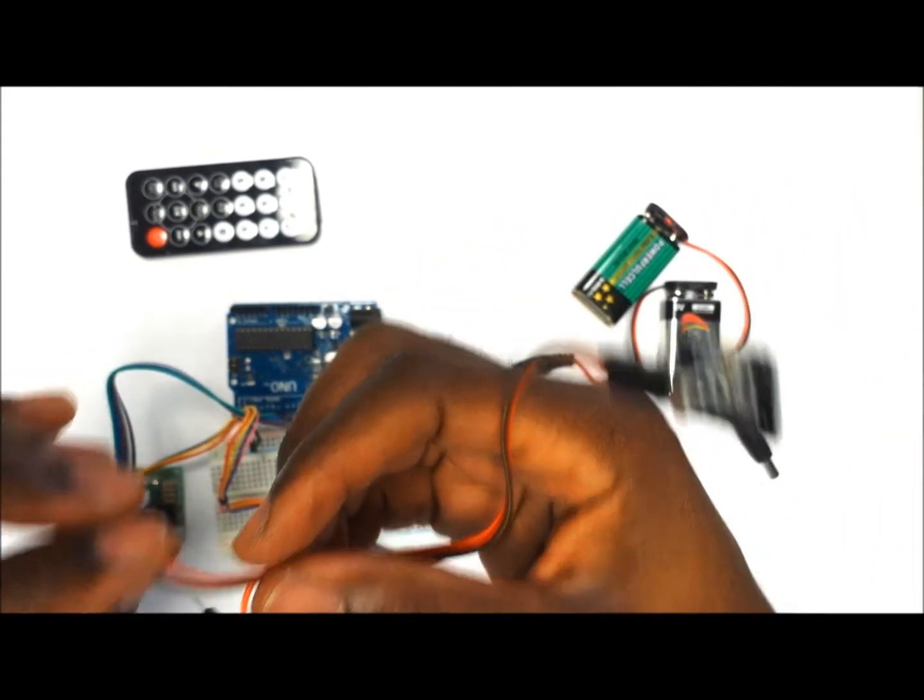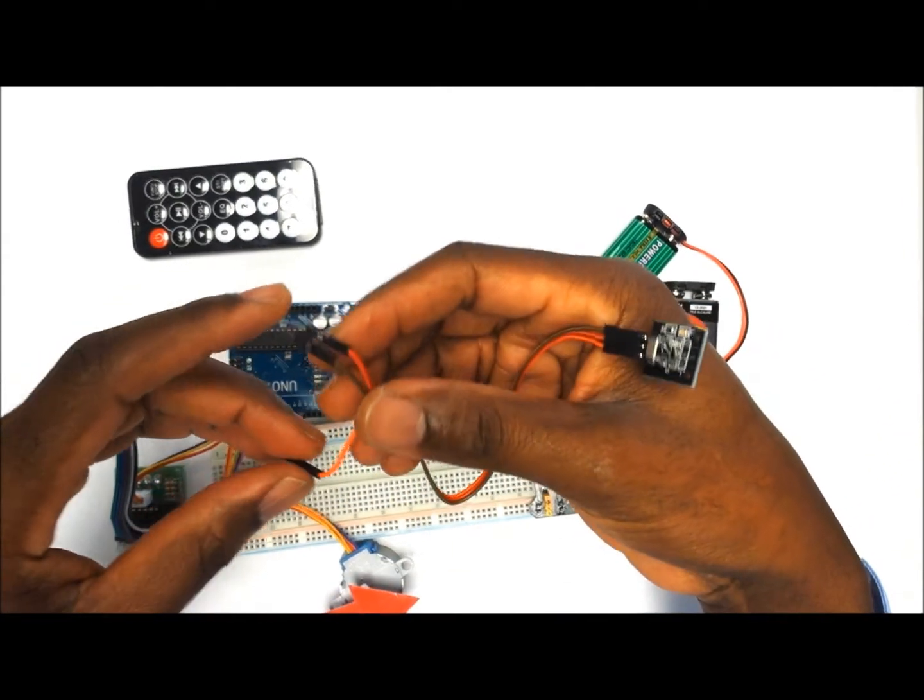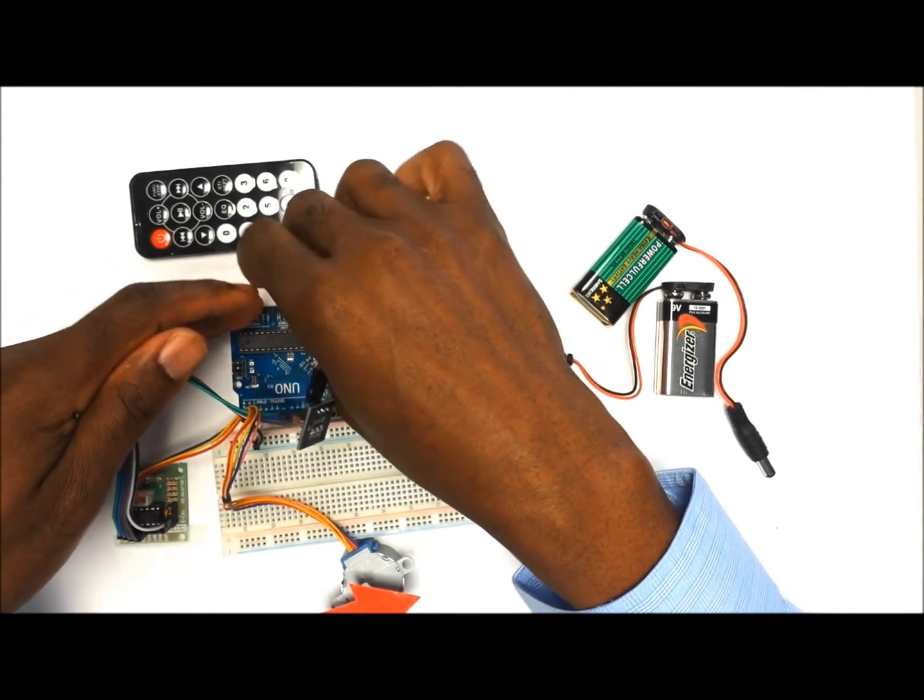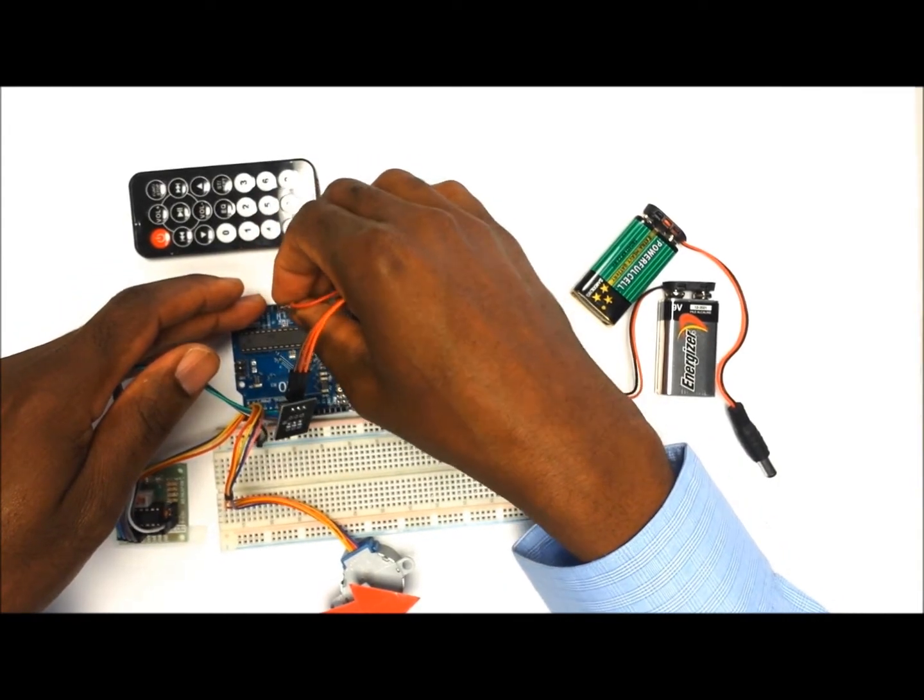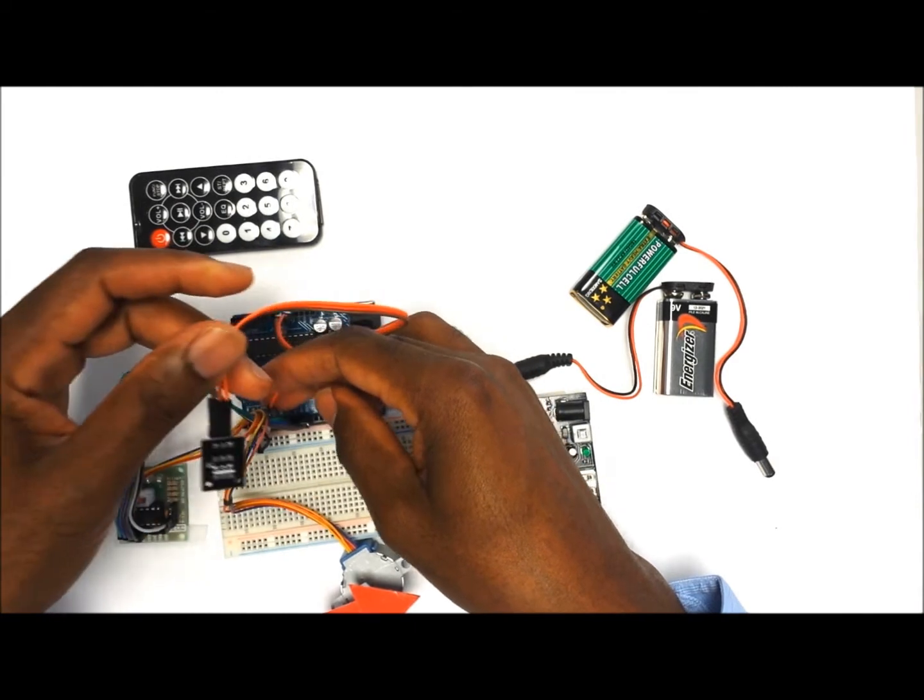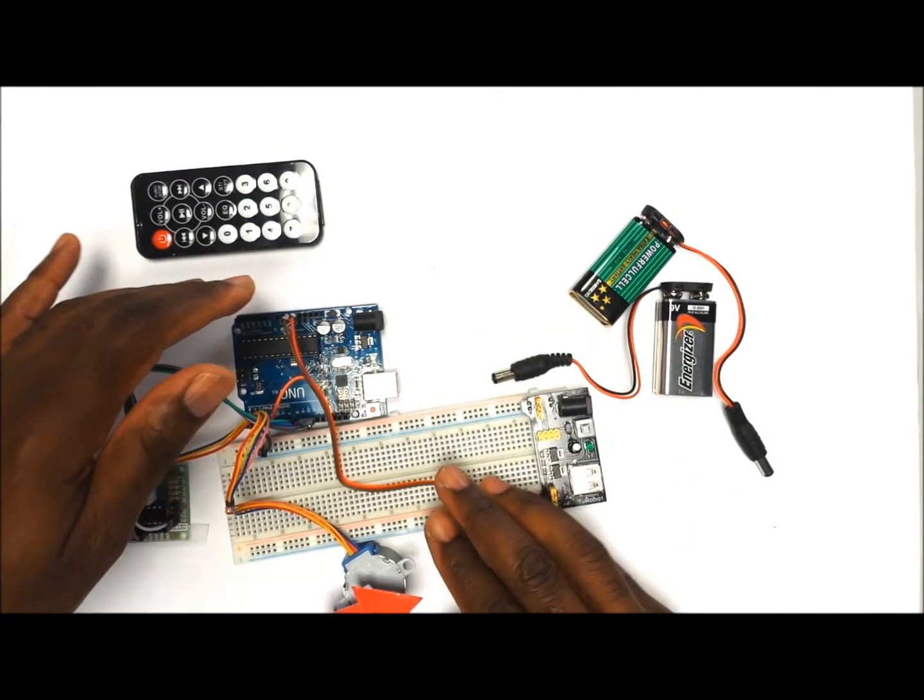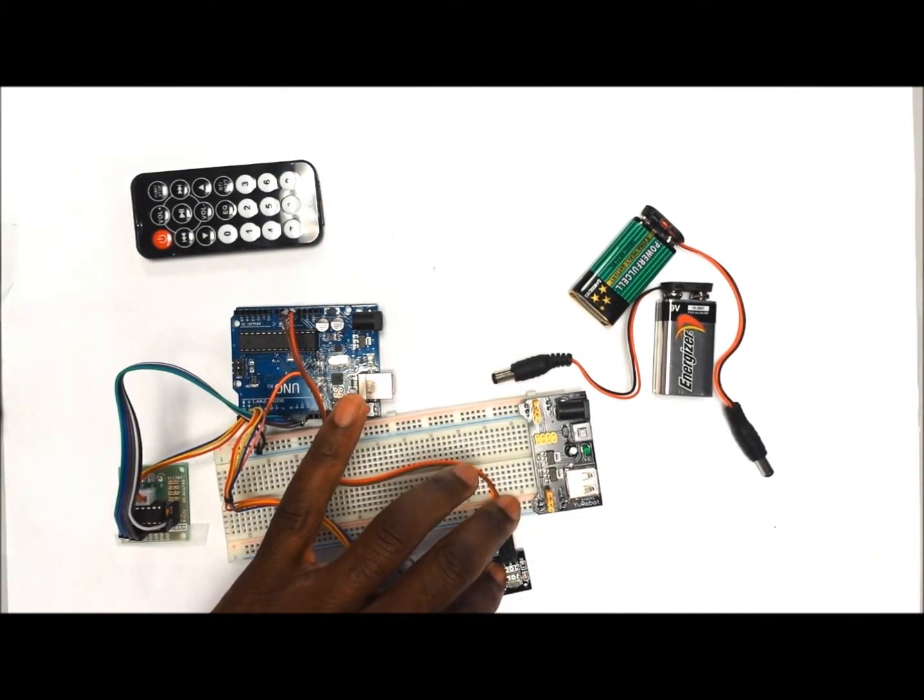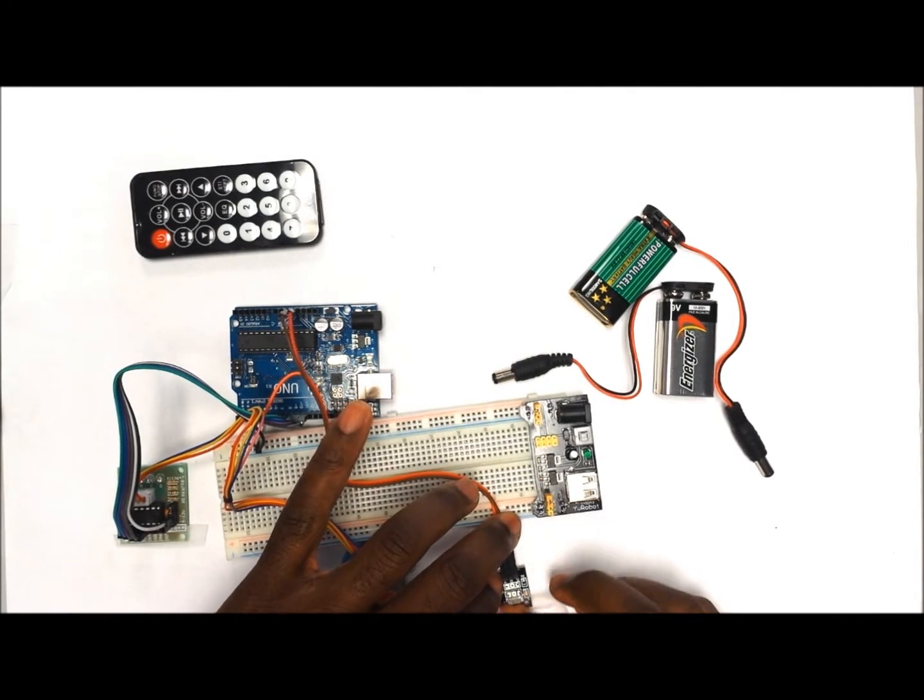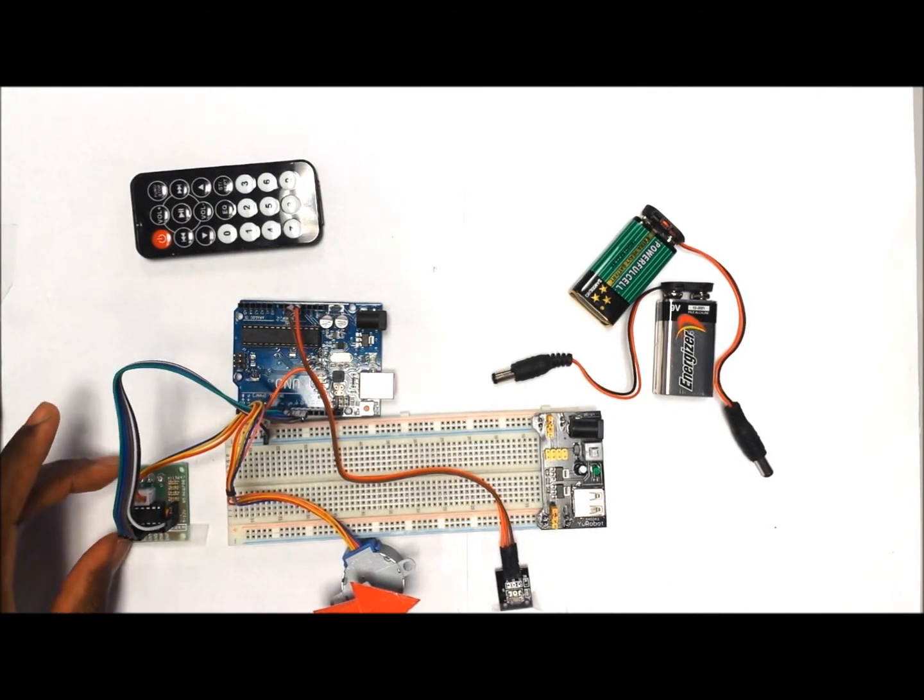So we are going to power the IR receiver from the Arduino itself. We are going to have our ground being connected to the ground on the Arduino, and then we are going to pull five volts from the Arduino also like so. Then the signal wire is going to be connected to pin number 6 on the digital side. So that completes the connection for the IR receiver. And again, I'm going to tape it on so that it stays in place like so.